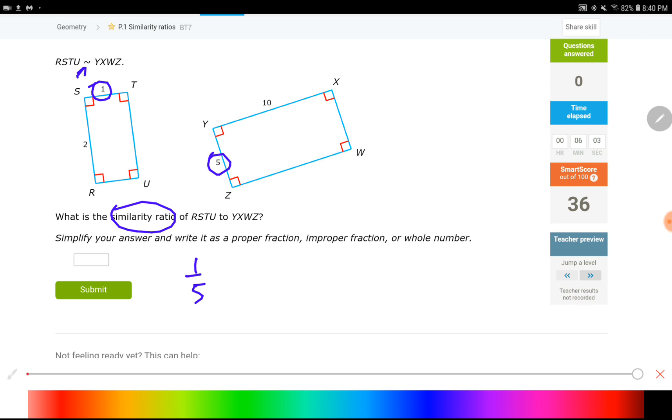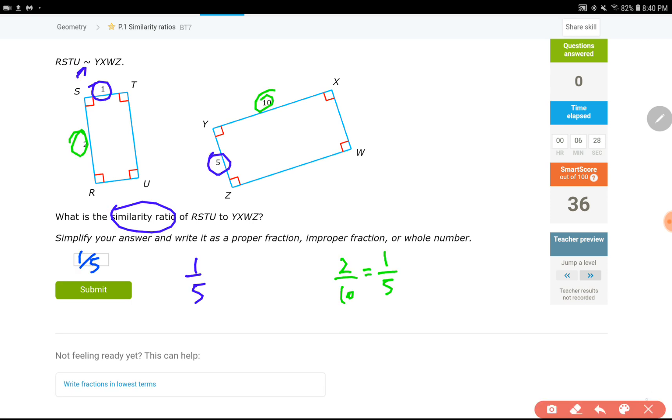The other way of writing this is some of you may wonder why not two and ten because they do correspond to each other as well. Yes, you can go ahead and do that one. But then you need to simplify this because you can divide both of the numbers by two, which is reduced to one fifth. The end result is going to be the same anyways. So you would put one fifth over here as your final answer.